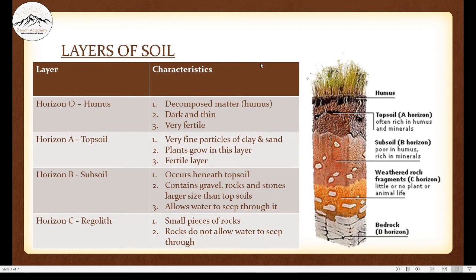Let's now learn about the layers of soil. The topmost layer is known as Horizon O, that is humus. Then there is Horizon A, Horizon B, Horizon C, and D. Think of O as origin — it is zero, the very first layer. So first comes Horizon O and not Horizon A. Keep that in mind.